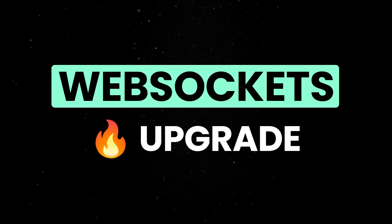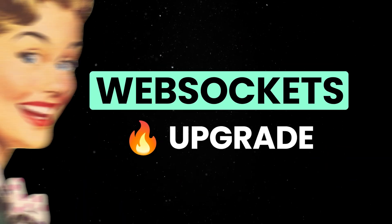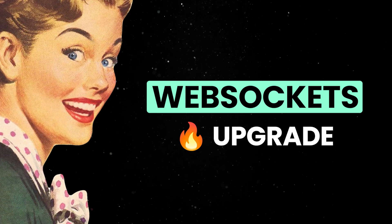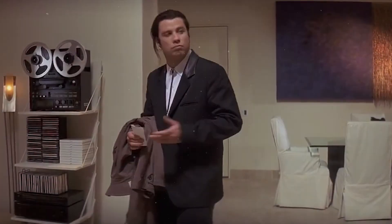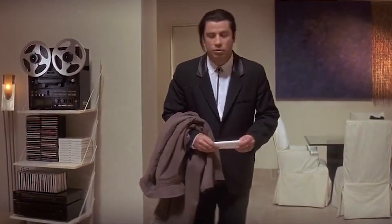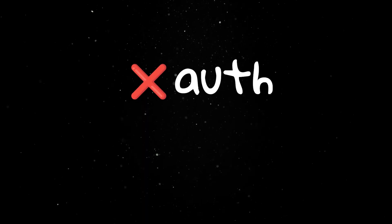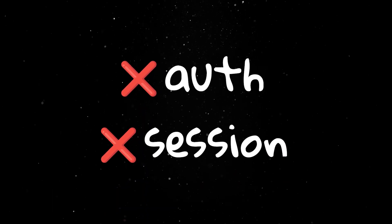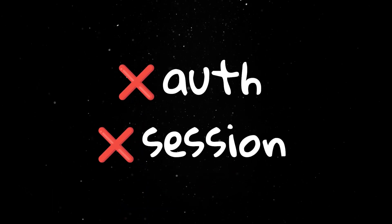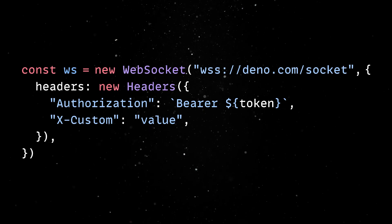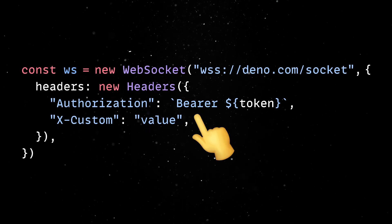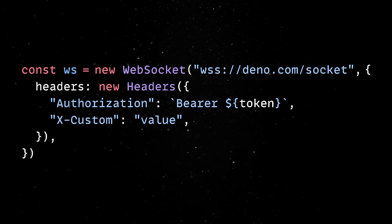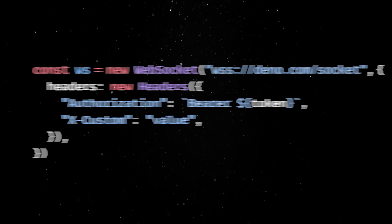WebSockets are getting an upgrade as well. Up until now, if you wanted to pass custom headers when creating a WebSocket connection in Dino, you were out of luck. That made things awkward for authentication or sending session data without dumping it into the URL. But moving forward, you can now pass a headers object when you create the connection, so you can attach a bearer token, a custom header, or anything else you need, right at the handshake stage.